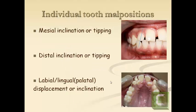In class 1 malocclusion, since you have a normal relationship of molars, the line of occlusion may be incorrect, or you can have various individual tooth malpositions. For example, with a normal molar relationship, you may see inclination or tipping of teeth — here the lateral incisor is tipped distally.